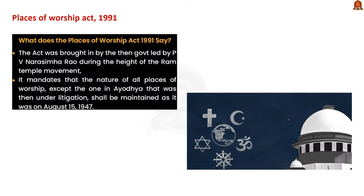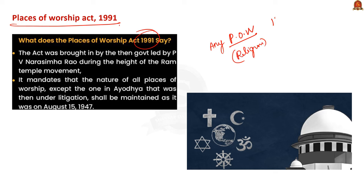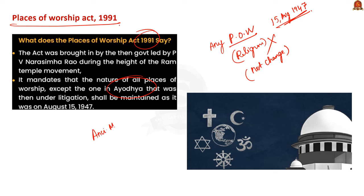Now, let us learn about the Places of Worship Act. Last year, this Act was in news regarding the Ayodhya case. The Places of Worship Act was implemented in 1991, and it states that any place of worship of a particular religious character as it existed on 15th August 1947 should not be changed into another religious character. Basically, the religious character of any place of worship should remain as it existed on 15th August 1947. There was an exception to this Act — it was given to the disputed site at Ayodhya, and also to any monuments covered under the Ancient Monuments and Archaeological Sites and Remains Act of 1958.